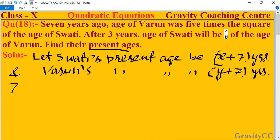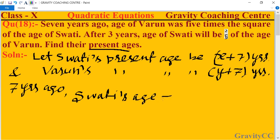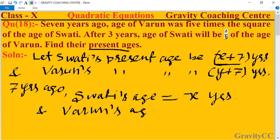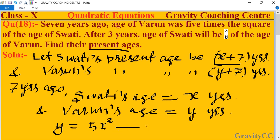Seven years ago, Swathi's age would be x, and Varun's age would be y. According to the question, seven years ago Varun's age was five times the square of Swathi's age, so the first equation is: y = 5x².